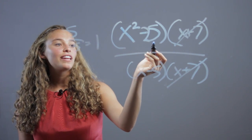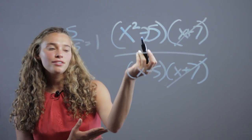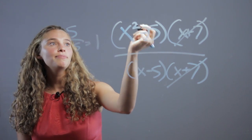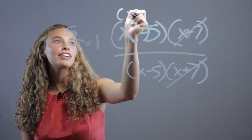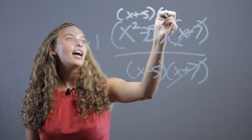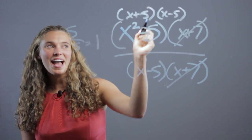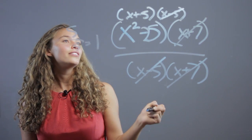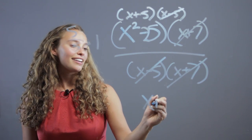Now we have x squared minus 25 and x minus 5. Just leaving these alone, they don't look like we can cross them off, but that's why we have to factor. Simplify by factoring: x squared minus 25 can become the two polynomials x plus 5 and x minus 5. Then we see we have two x minus 5s, so we can cross those off. We end up with x plus 5 over 1, which is x plus 5.